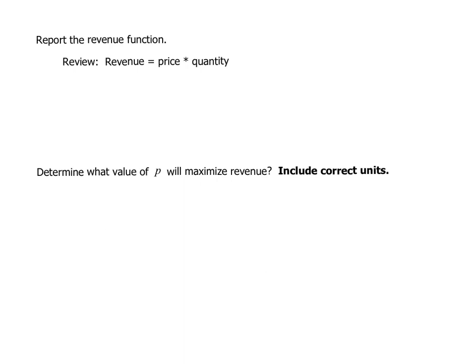The next thing they're asking us to do is to build the revenue function. Remember we just built this demand function, Q equals negative 2P plus 300.